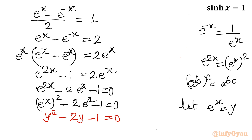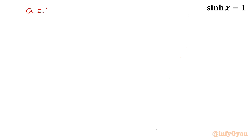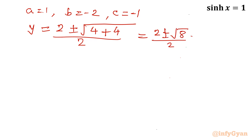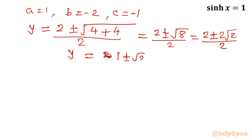Applying the quadratic formula with a = 1, b = -2, c = -1: y = (-b ± √(b² - 4ac)) / 2a = (2 ± √(4 + 4)) / 2 = (2 ± √8) / 2 = (2 ± 2√2) / 2. So ultimately y = 1 ± √2.